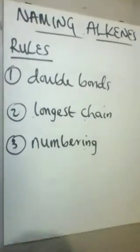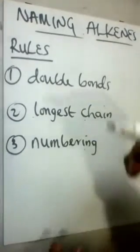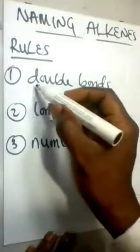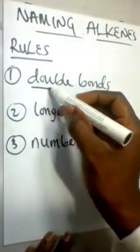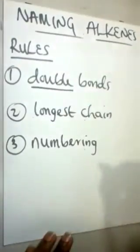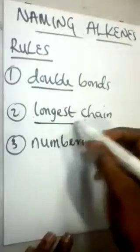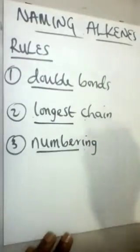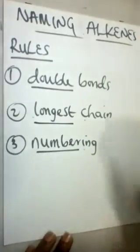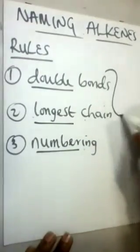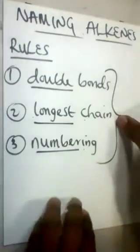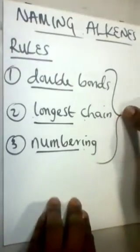How do we name alkenes? What are the simple rules? First, identify double bonds. Second, identify the longest chain. Third, number the carbon atoms. Let's apply these three basic rules in naming simple alkenes.